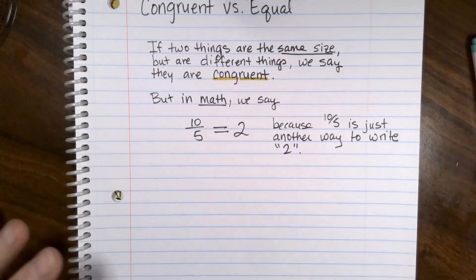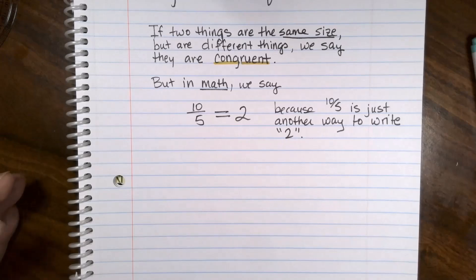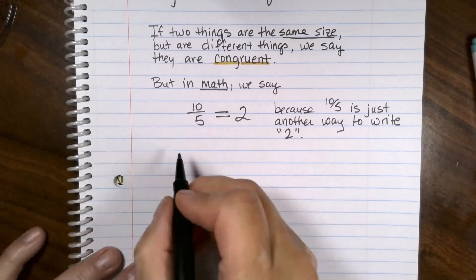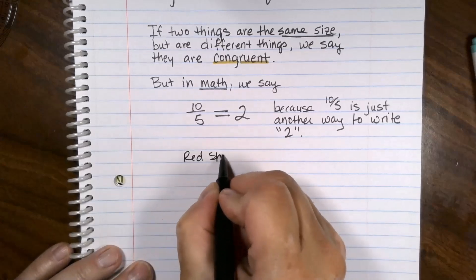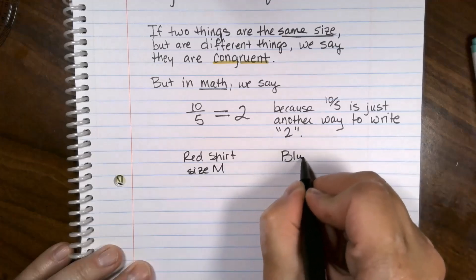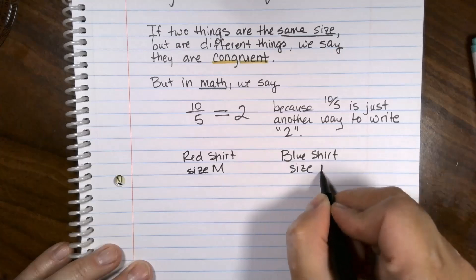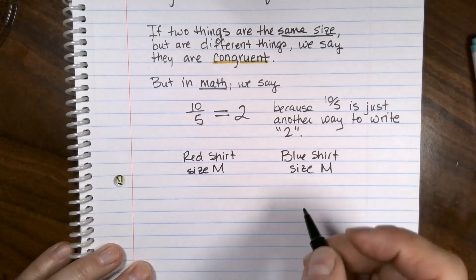The symbol for congruent is a little bit different. Let's go back to the shirts. A red shirt of size medium compared to a blue shirt of size medium, we would say red shirt size M and blue shirt size M are not equal. They're two different shirts, but they are congruent.